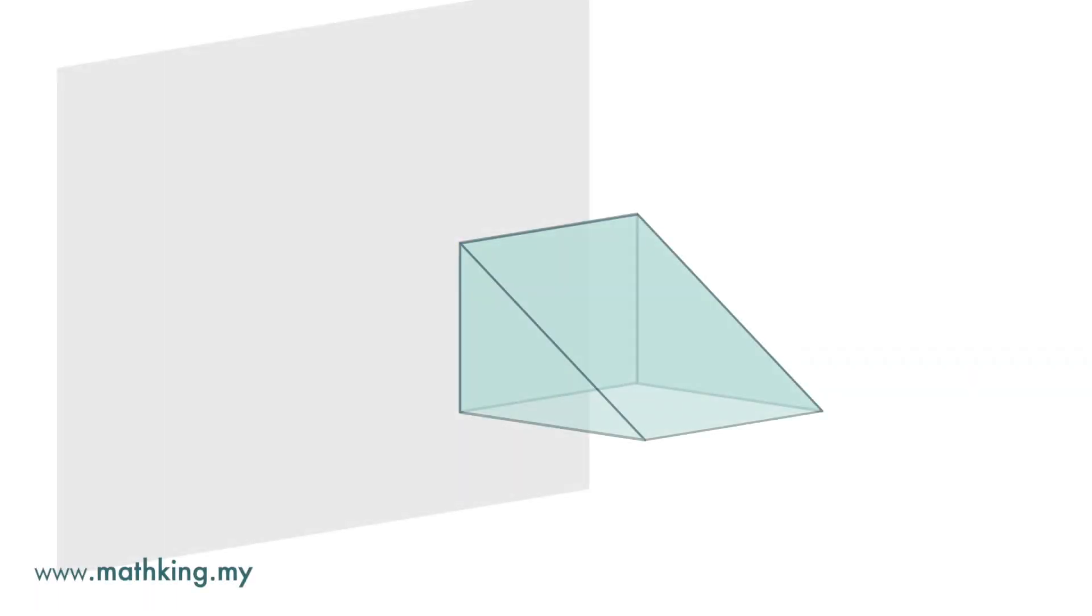Next we have this object and we want its orthogonal projection. Now let's draw projection lines from the corners. Here, if we join up the points, we get the orthogonal projection.